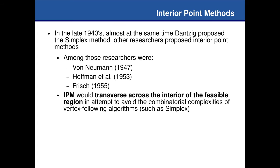Some other researchers were working on interior point methods. By interior point methods, instead of visiting vertices, we are actually visiting the interior regions of our feasible set — we walk inside such feasible region. Some researchers working on that included Von Neumann, Hoffman, Petal, and Frisch. Those interior point methods would traverse across the interior of the feasible region and not just visit corners like simplex.